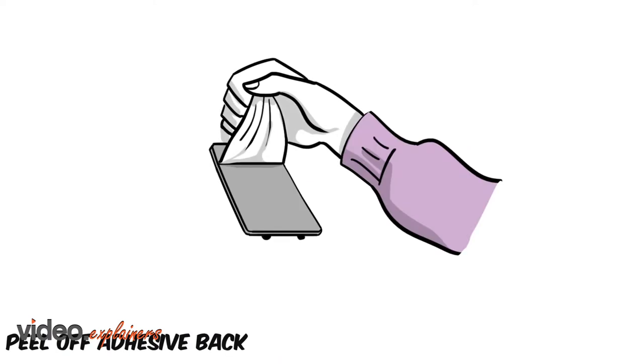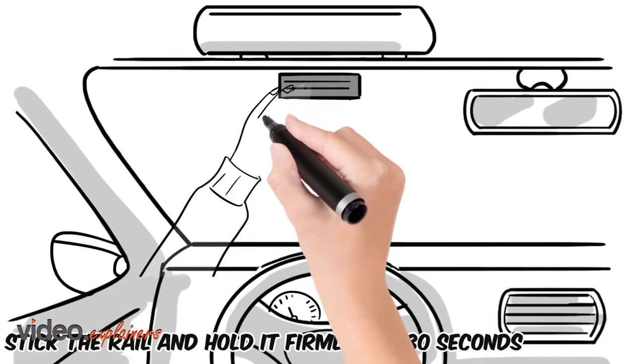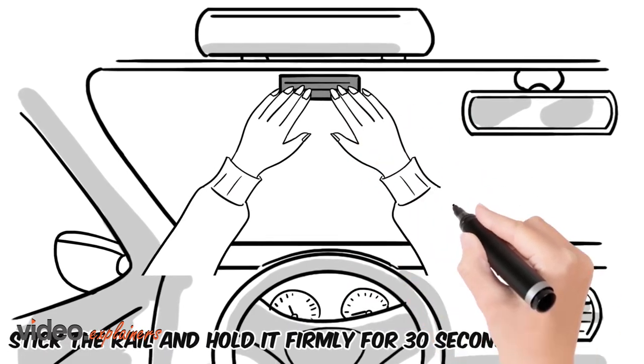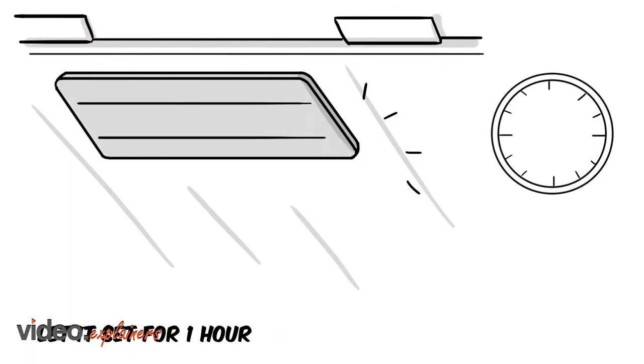Peel off the adhesive back. Hold it horizontally and stick the rail to the windshield by pressing firmly and holding for 30 seconds. Let the adhesive set for one hour.